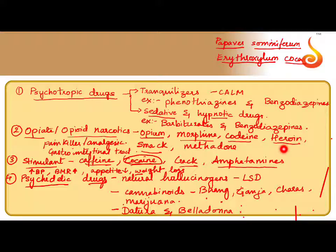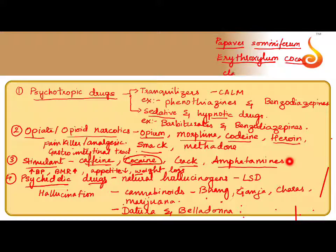The last category is psychedelic drugs. These include LSDs, cannabinoids, datura, and belladonna (Atropa belladonna). These cause direct hallucinations. In most other drugs, hallucination occurs only at higher doses, but with psychedelic drugs even a small dose causes severe hallucination. This hallucination is synthesized from a fungi called Claviceps, and from the fruiting body of Claviceps we get LSD — lysergic acid diethylamide.